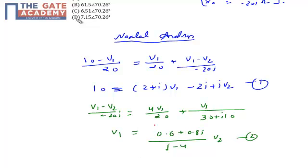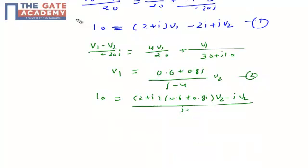Now put the value of V1 in equation number 1. The value of V1 from equation number 2 should be put in equation number 1. So I can get the expression as 10 will be equal to (2 plus J) times (0.6 plus 0.81) times V2 minus J times V2 by (J minus 4).